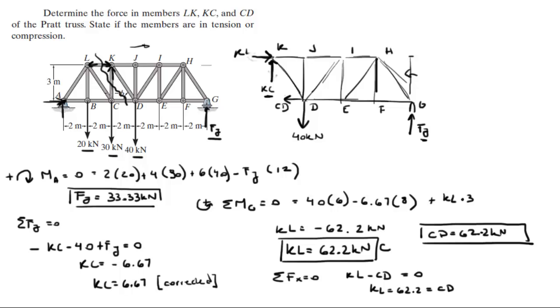Kc is going that way, which means this is going this way, which means also in compression. And Cd is going this way, which means it's going this way, which means it's in tension.